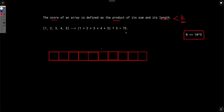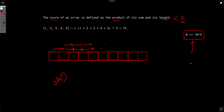How do we solve this? The brute force solution is to try all possible subarrays and compute the score for each. There are O(n²) total subarrays, so the time complexity would be O(n²). That will not pass because the value of n itself is up to 10 to the power of five.